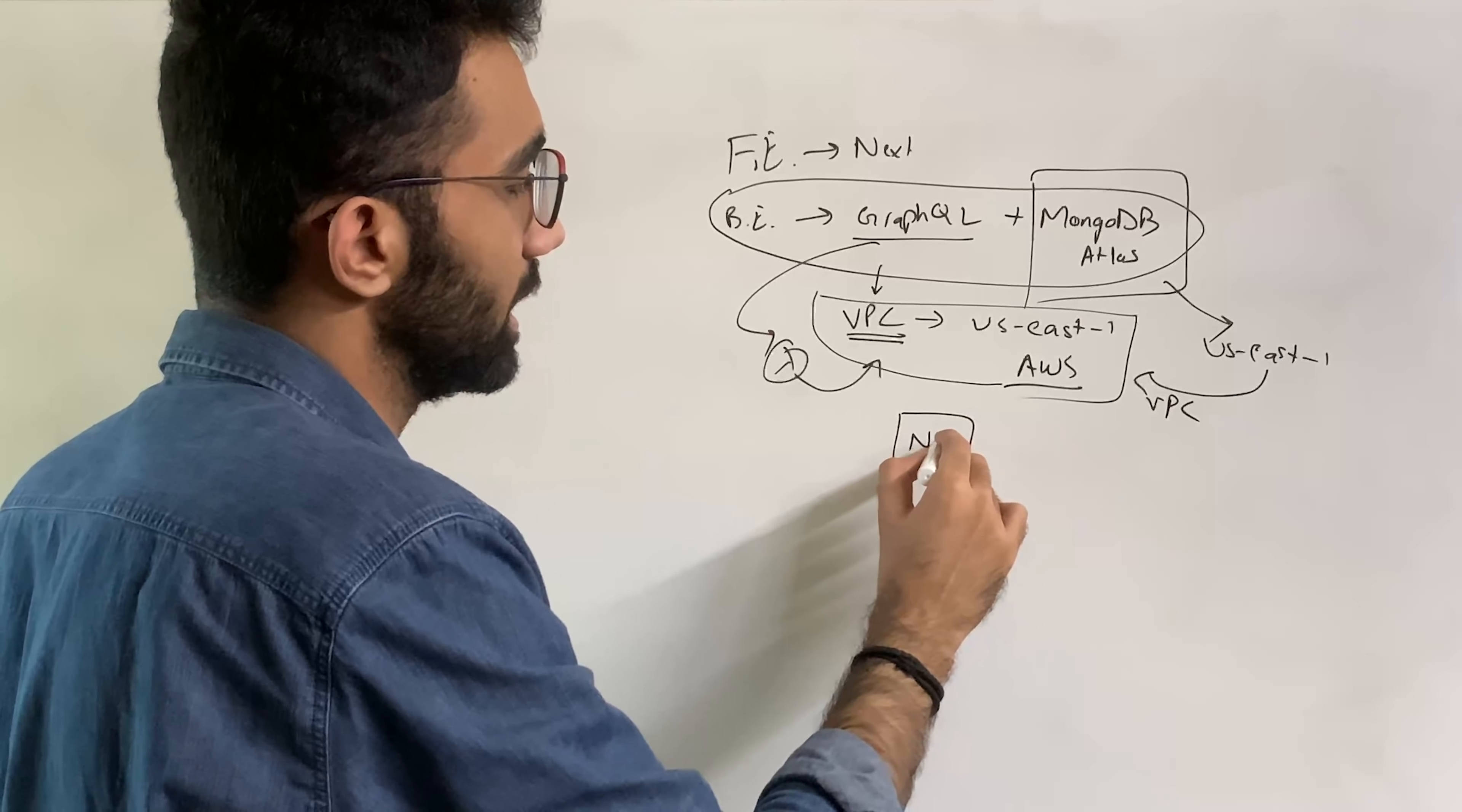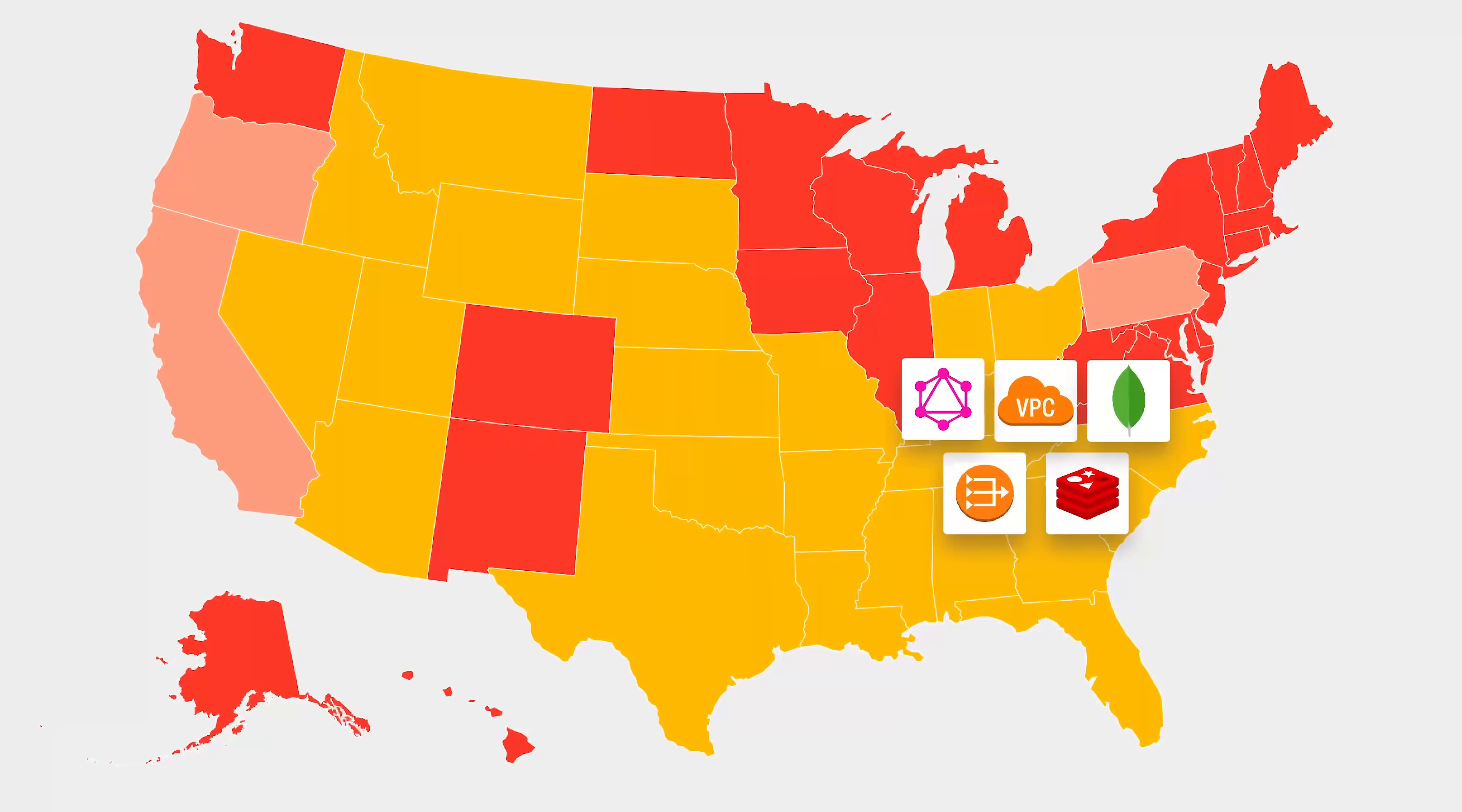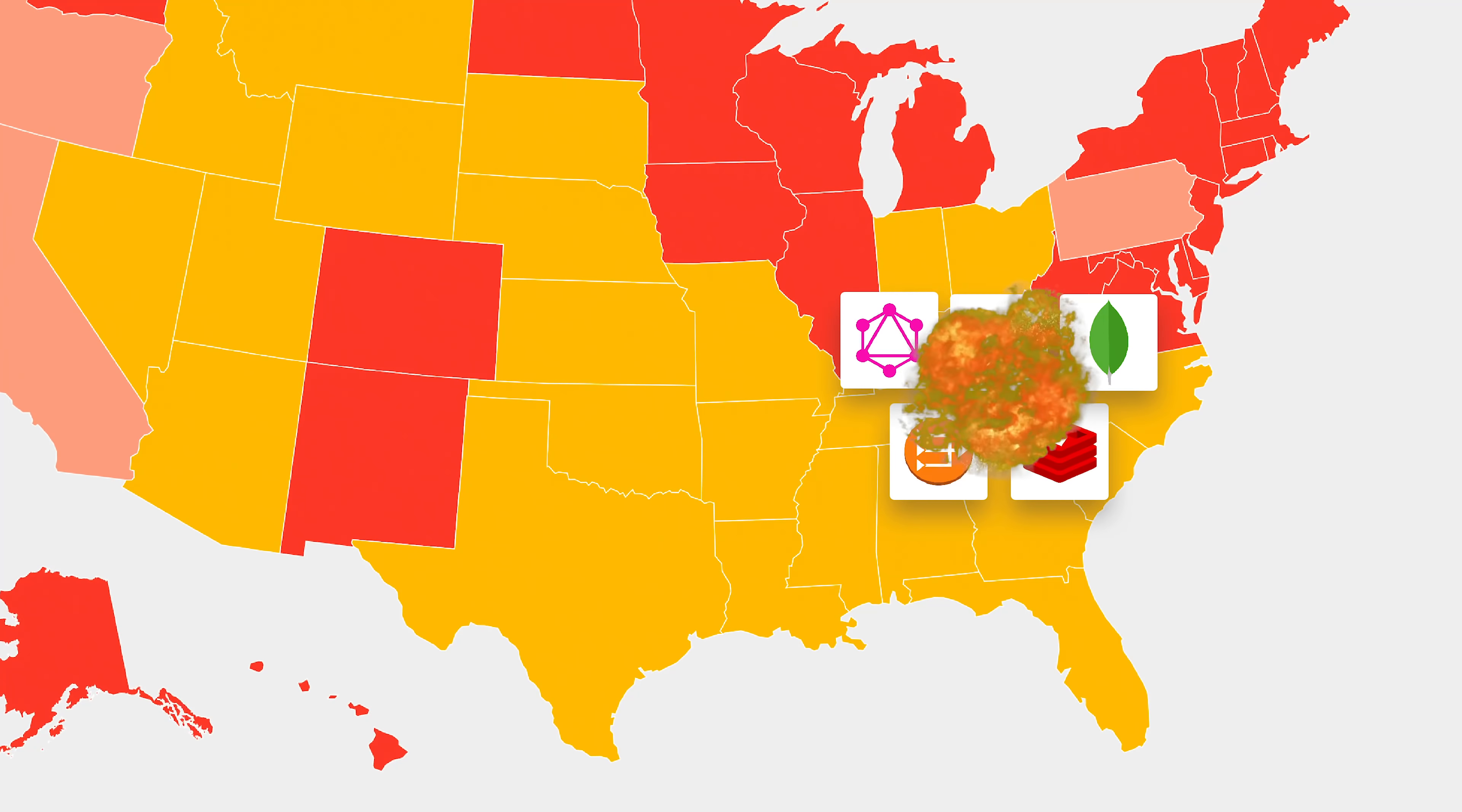The NAT gateway which enables Lambda to access internet is deployed in US East 1. The Redis caching is deployed in US East 1. So we have a lot of components in US East 1 and this region suddenly had a lot of services failing today.